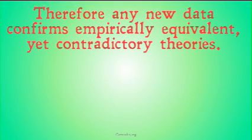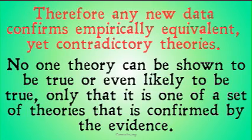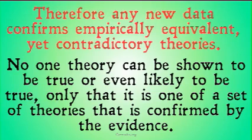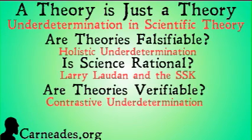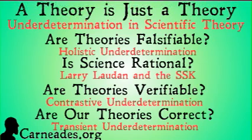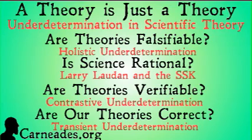Therefore, any new data confirms empirically equivalent yet contradictory theories. No one theory can be shown to be true, or even more likely to be true — only that it is one of a set of theories confirmed by the evidence. The only way to decide between them is through irrational means. That was 'Are Our Theories Verifiable — Contrastive Underdetermination.' In our final video, we'll wrap up, ask whether our theories are correct, and discuss transient underdetermination. Watch this and more at Carnades.org, and stay skeptical.